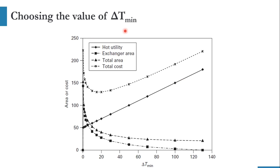Choosing the value of delta T minimum is very important. As discussed in the previous lecture, by increasing delta T minimum, the heating utility and cooling utility increase while the heat exchanger area decreases. Looking at the cost diagram: with increasing delta T minimum, hot utility increases linearly, heat exchanger area decreases, and total area follows a similar trend. However, total cost decreases to a minimum point and then starts increasing again. That minimum point region is the most suitable for an optimum design.